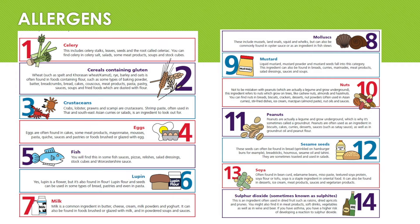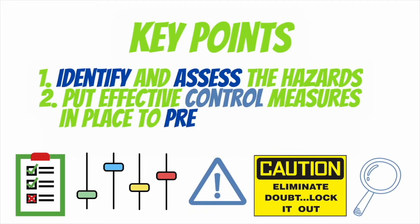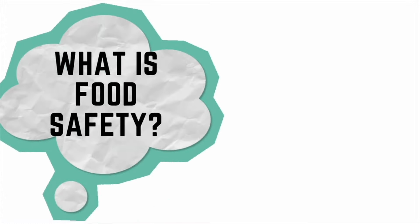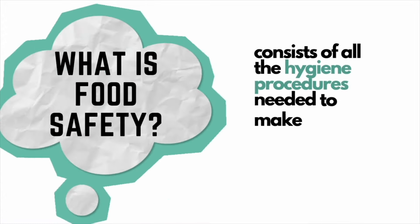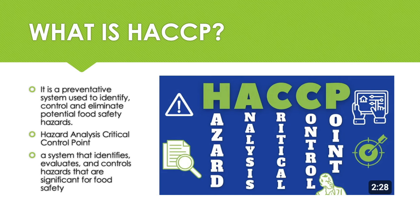The hazard identification is done in two steps: first, the identification of hazards, then an evaluation of the hazard. The hazard evaluation is a determination of the degree of risk to the user from the identified hazard. Once the hazard is identified and evaluated, the team must identify all the hazards, decide which hazards need to be either eliminated or reduced to acceptable levels, consider the risks, assess the likelihood of either the survival or the multiplication of any microbiological hazards, assess the possible production or persistence in the food of toxins, chemical or physical hazards, and decide what control measures can be applied for each hazard.